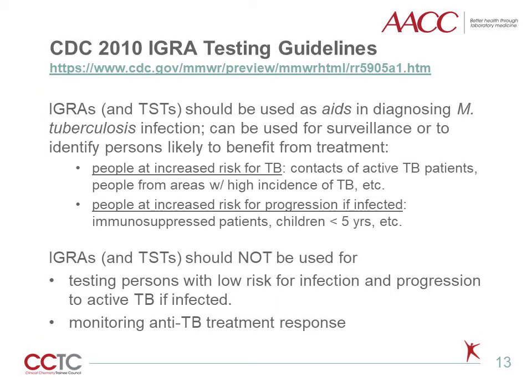If clinicians are looking for guidance on how best to screen their patient for latent TB, CDC's website on IGRA testing is always a great resource, offering guidelines on whom to test for TB, when, and by what method. IGRAs and TSTs should be used as aids in diagnosing M. tuberculosis infection and can be used for surveillance or to identify persons likely to benefit from treatment, including contacts with active TB patients, people from areas with high incidence of TB, immunosuppressed patients, and children less than five. On the other hand, IGRAs and TSTs should not be used for testing persons with low risk of infection and progression to active TB, nor should they be used to monitor anti-tuberculosis therapy response, as no correlation of IGRA results with clinical or microbiologic response to anti-TB therapy has been demonstrated.